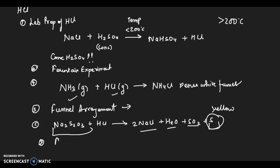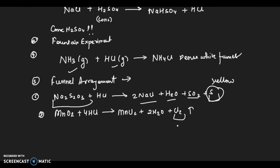One more reaction: MnO2 plus 4HCl, which is frequently asked, gives MnCl2 plus Cl2. This is chlorine gas which is greenish yellow in color. Note the colors also; they may ask you to identify by color.